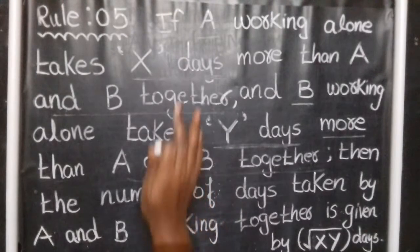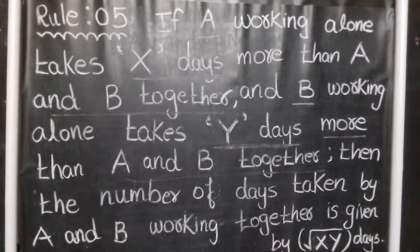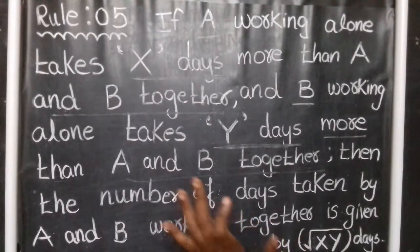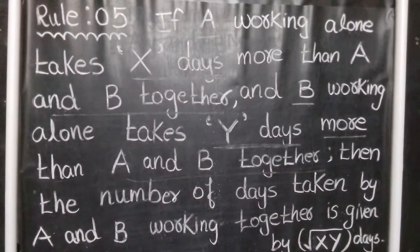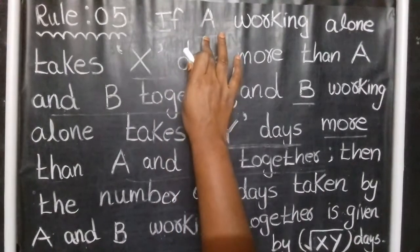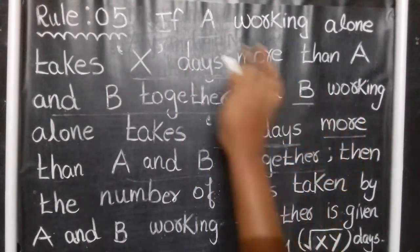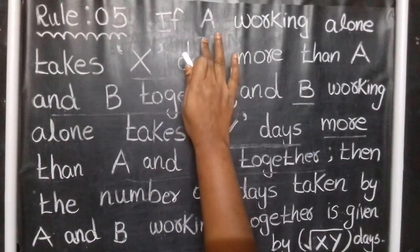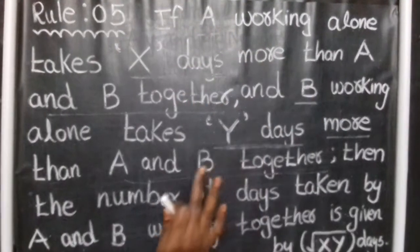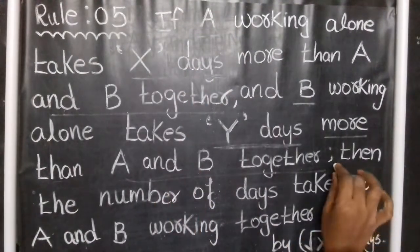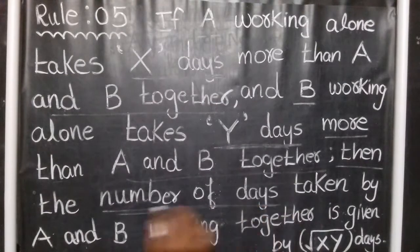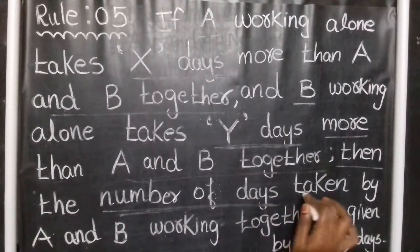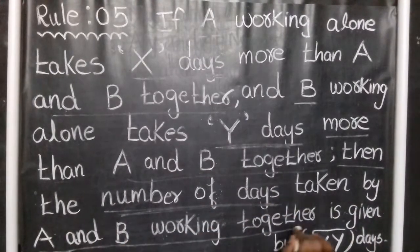Apply the shortcut directly. For time and work problems involving persons A, B, and sometimes C — when A and B are working together — this formula gives the number of days taken by A and B working together.